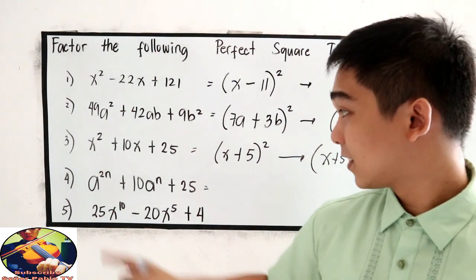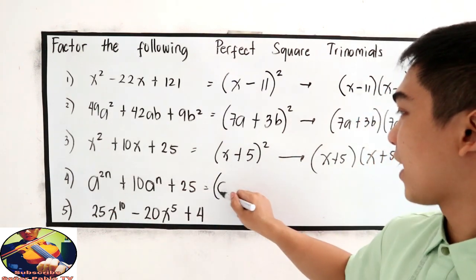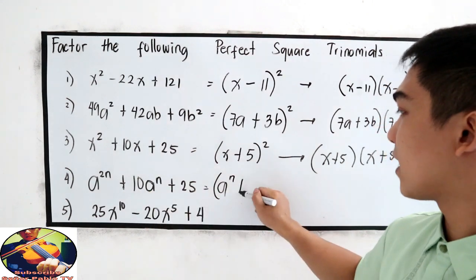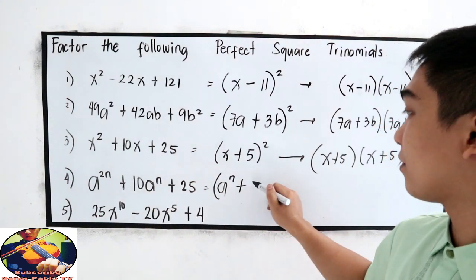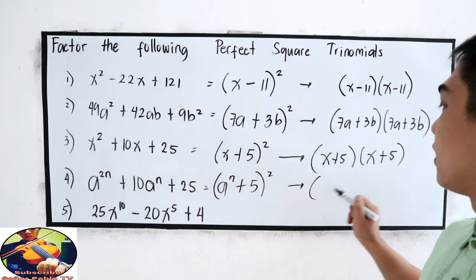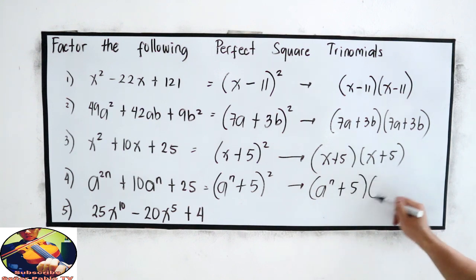Next, so we have a raised to n plus 5 squared, which can be written as a raised to n plus 5 times a raised to n plus 5.